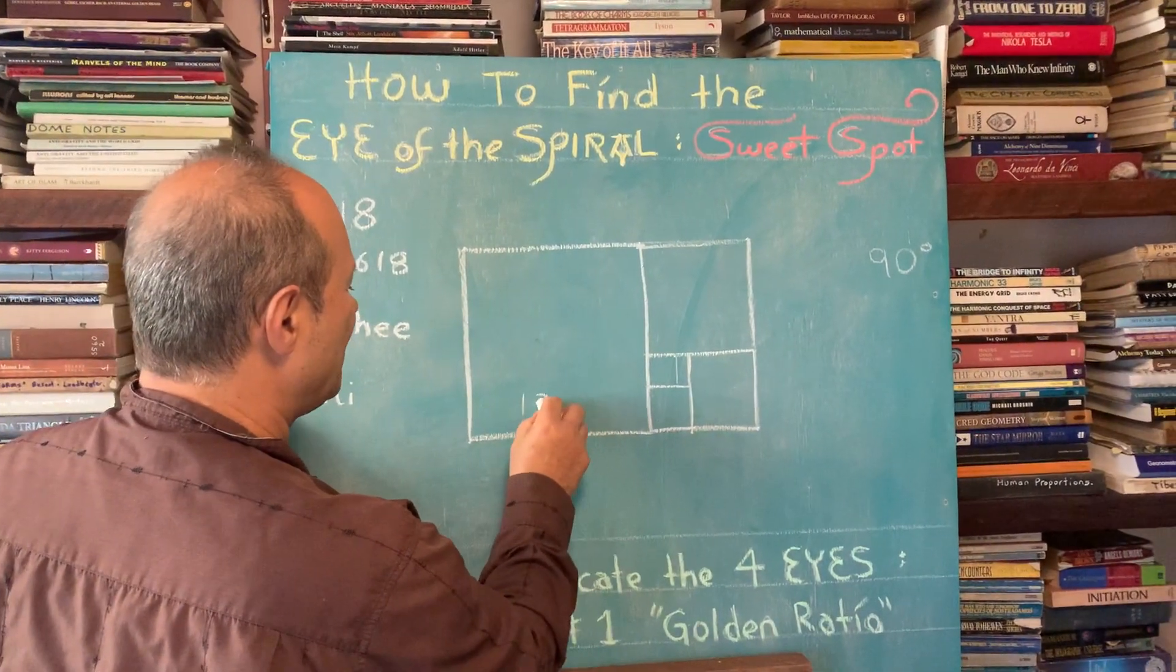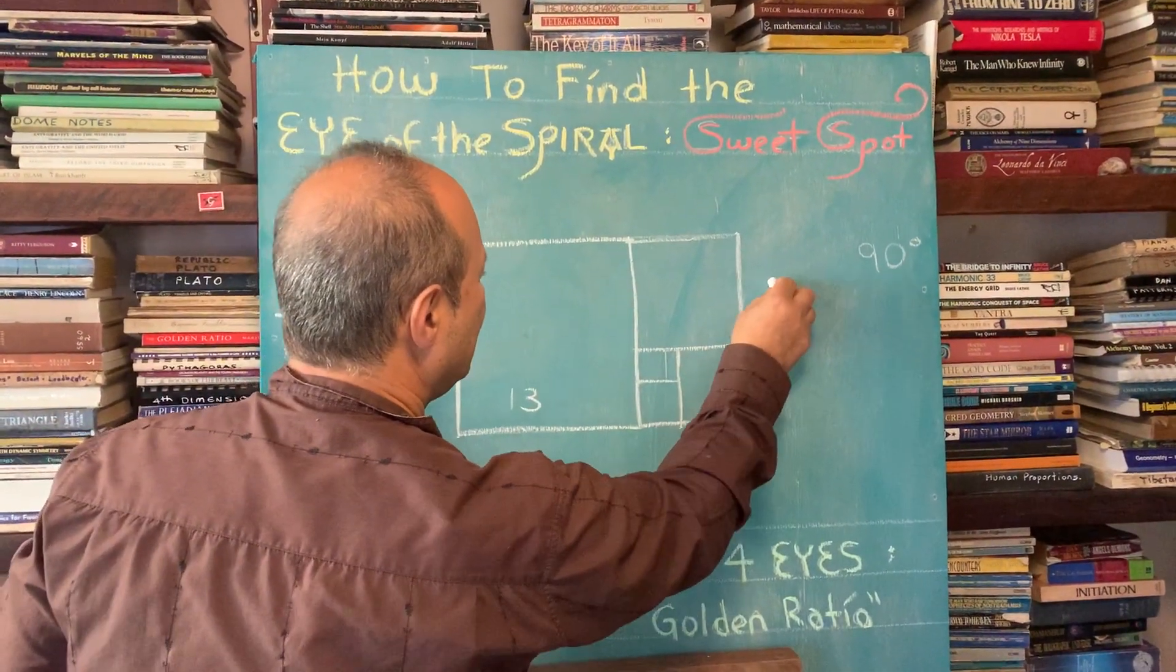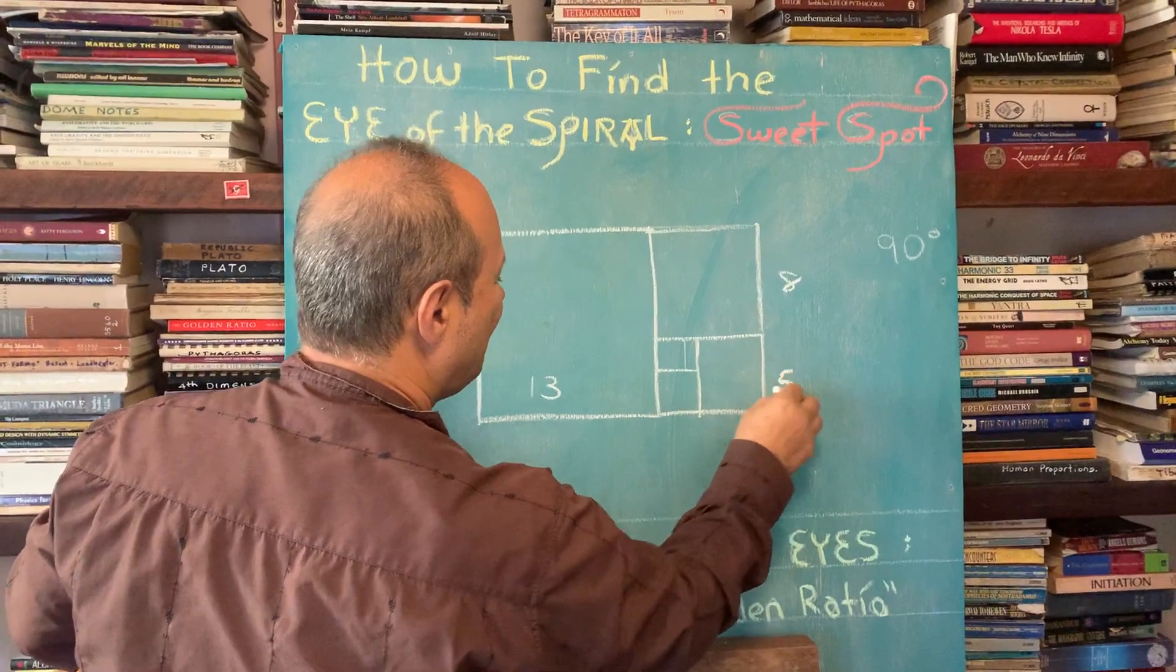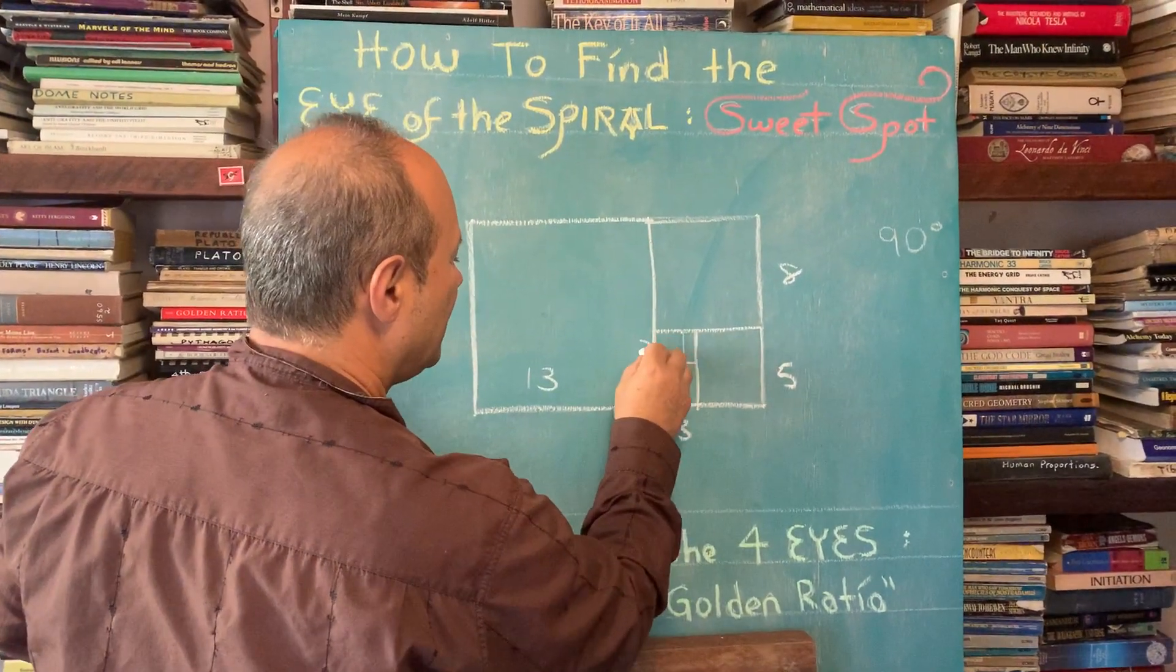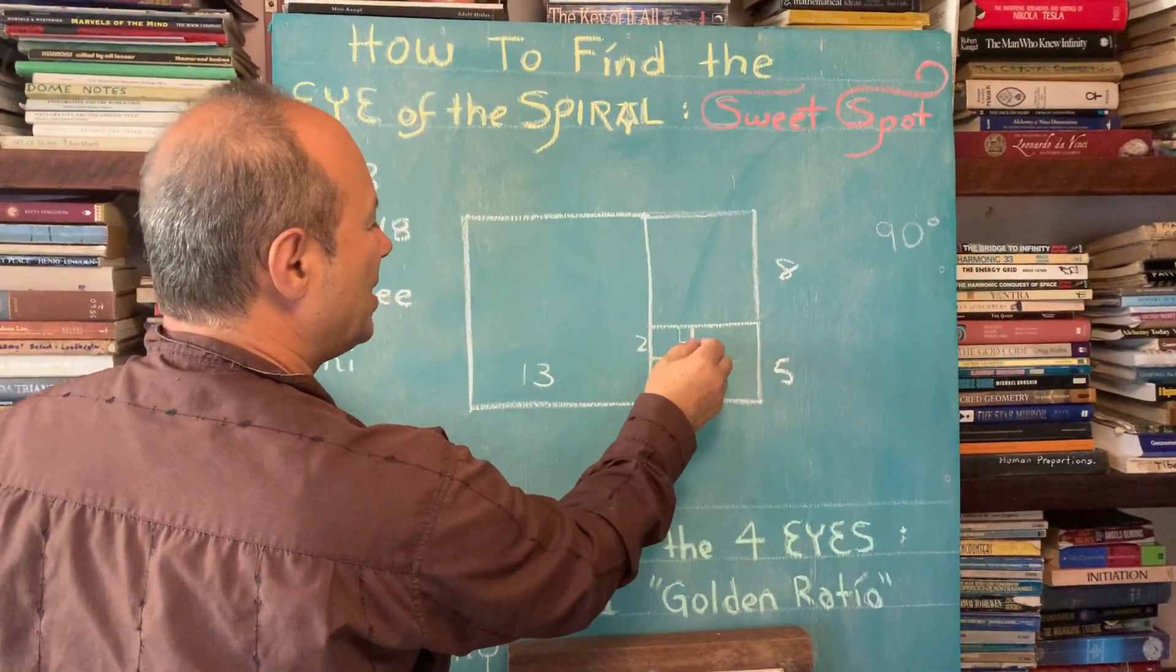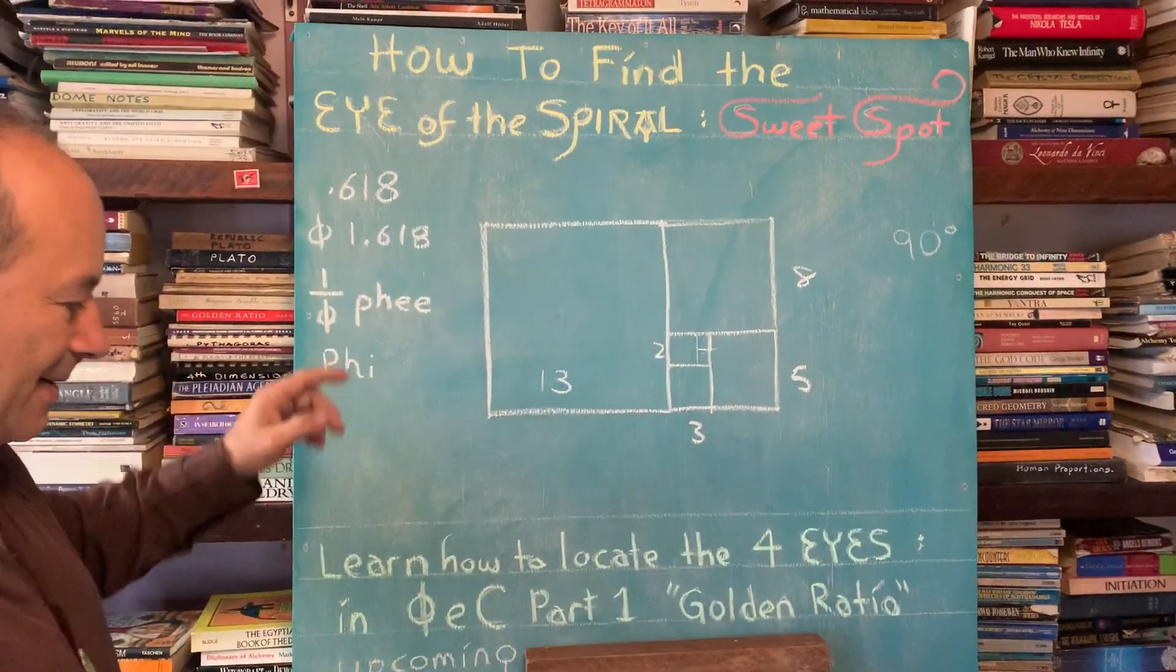But in Fibonacci numbers, that could be 13, 8, 5, 3, 2, and 1. But we don't know where the center is, so we're going to get to that.